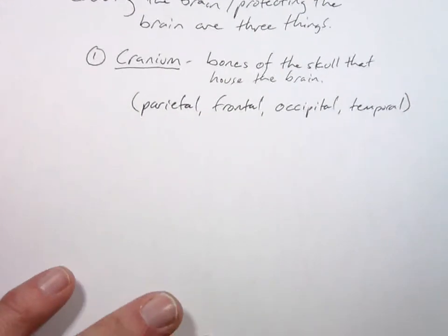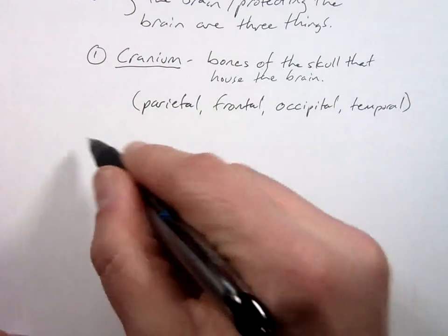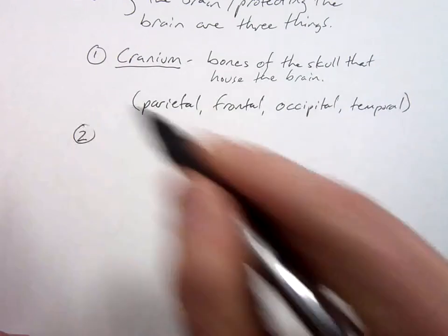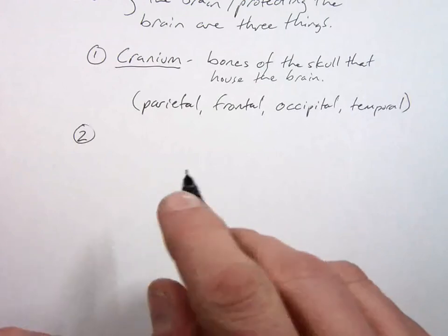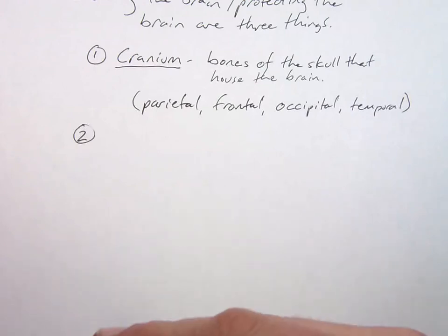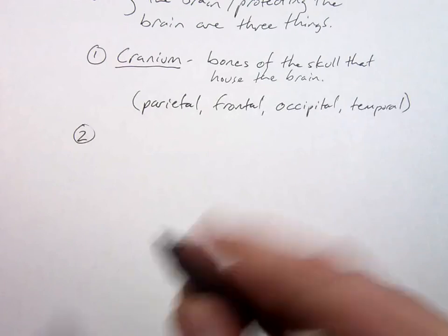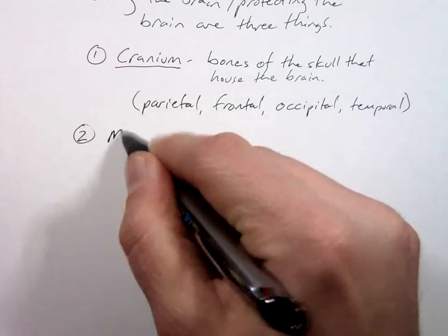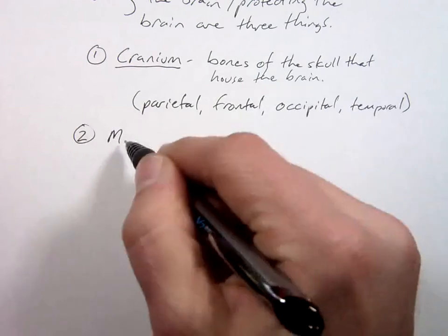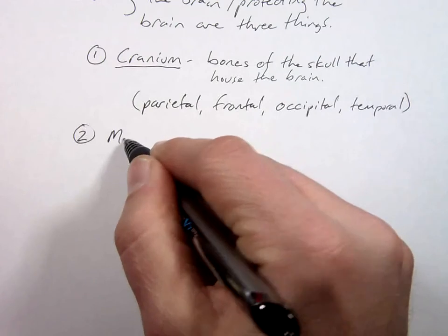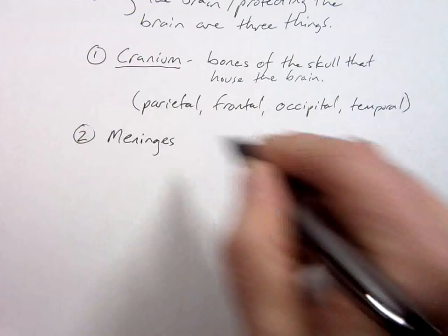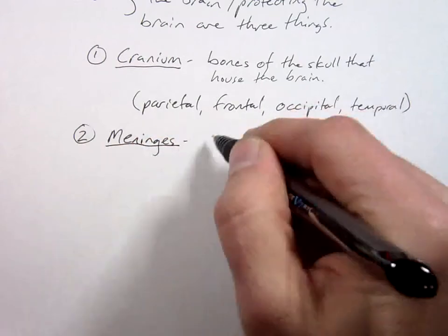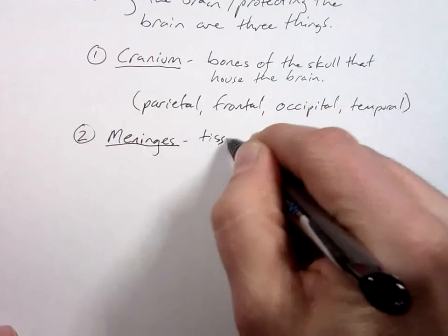So that's our major protection here. But if that somehow breaks down, we have another layer of protection underneath that's not quite so hard. Starts with an M. Meninges. The meninges.